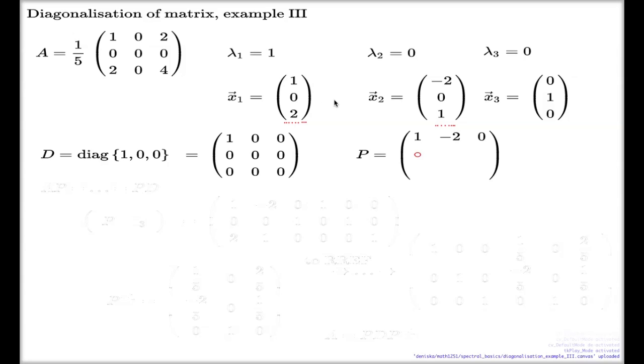And my P matrix just consists of these three vectors as columns. So it's negative 1, negative 2, 0 from the first row, from the first components here. 0, 0, 1 from the second row of components here. And 2, 1, 0 from the last row of components here.